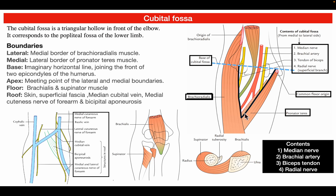The pointed portion is known as the apex, which is formed by the meeting point of the medial and the lateral border. The medial border is formed by the lateral margin of the pronator teres muscle. So medially it is formed by the lateral margin or border of pronator teres.